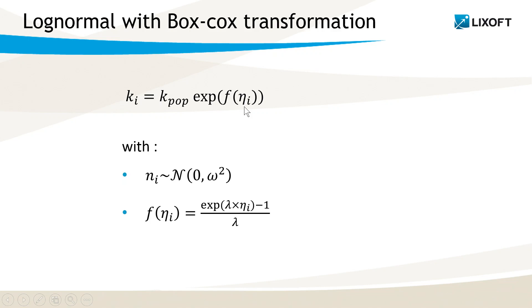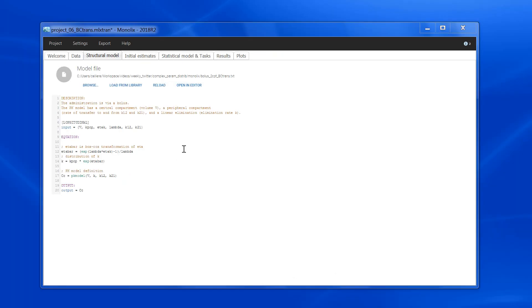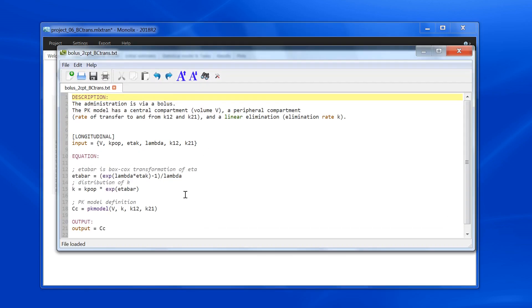Let's see this in practice. In the structural model that opens in the editor to have it bigger, in the input list I have defined kpop, the fixed effect, eta_k, the random effect, and lambda that controls the Box-Cox transformation. In the code, I defined eta_bar, which is the Box-Cox transformation of eta, according to the formula I had on the slide. And then I defined the elimination rate, k, as the fixed effect, kpop, times exponential eta_bar, the transformed eta.